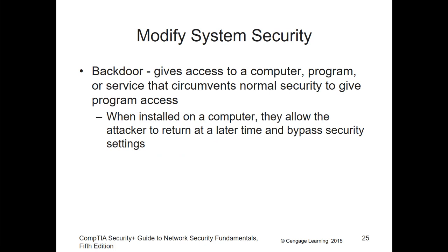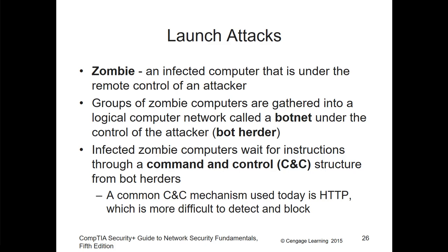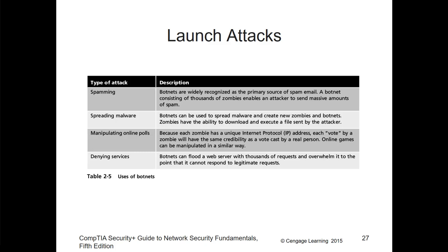Modifying system security includes backdoors to allow access, remote access — Trojans are a good example. This allows modification of systems so that an attacker gains access. For launching attacks, you could have a zombie computer as part of a botnet. A bot herder controls the botnet computers, and they typically respond to a command and control server called a CNC. The CNC server will direct a specific task and the infected items will carry out the appropriate commands. Other types of attacks could be spam, manipulating online polls, denial of service, or spreading additional malware.